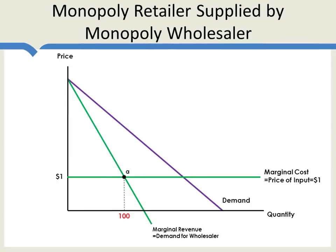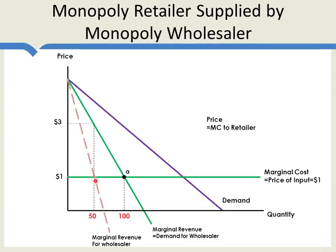Now let's add: what price will the wholesaler want to set? If this is the demand curve for the wholesaler, we need to find the marginal revenue curve for the wholesaler — that's the curve with twice the slope, similar to what we had before. We can now see that the wholesaler will choose the point where marginal revenue equals marginal cost — this is the true marginal cost for the wholesaler — and sets a price of, let's say, $3.